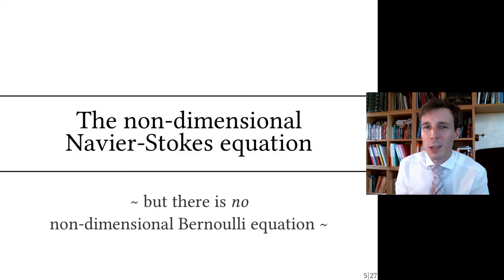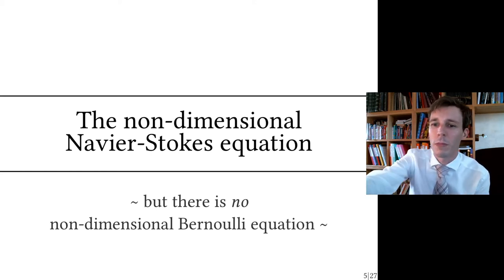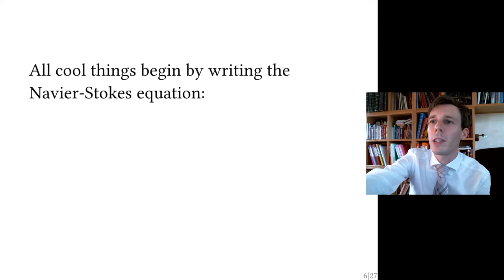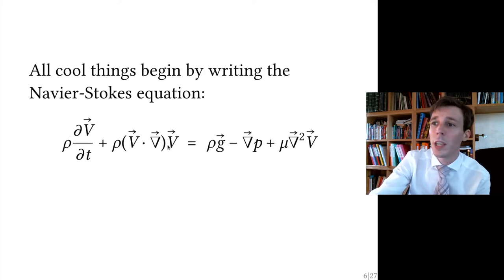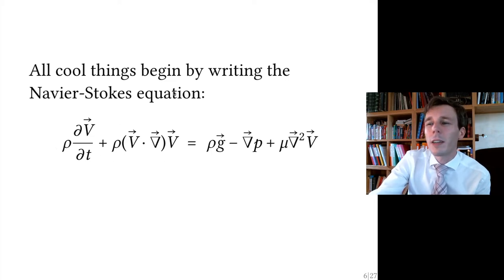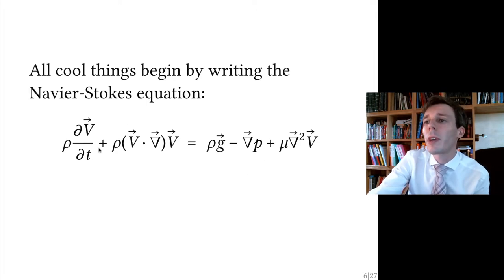What we want to do is write a very well-known and useful equation: the non-dimensional version of the Navier-Stokes equation. We start with the Navier-Stokes equation, which says mass times acceleration — this part here is the change in time of the velocity field and the acceleration field — and this mass times acceleration is due to gravity, pressure, and shear. We want to rewrite this equation in a non-dimensional way.